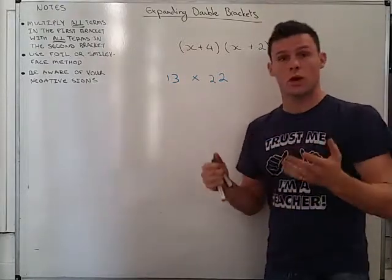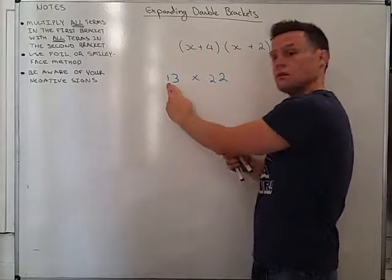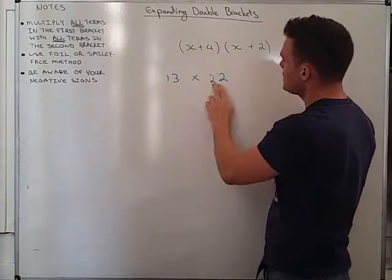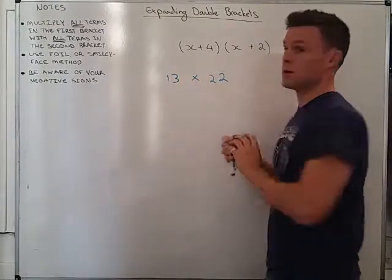If I wanted to do 13 times 22, the way we do this is we go 10 because that one is in the tens column, that has a value of 10. So 10 times 20 and then 10 times 2, and then we do 3 times 20 and 3 times 2.